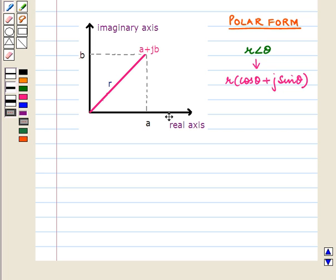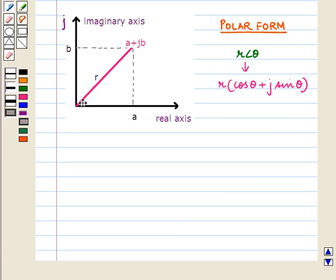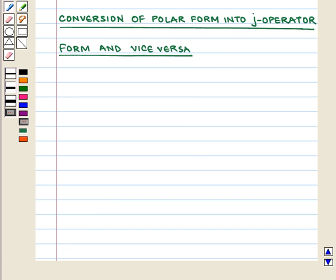On the Argand plane, the horizontal axis is the real axis and the vertical axis is the imaginary axis, which represents the J operator. The vector represents the complex number A plus JB, written as R angle θ, or R times (cos θ plus J sin θ) in polar form.